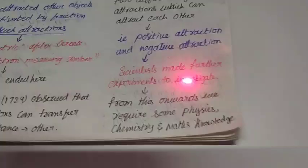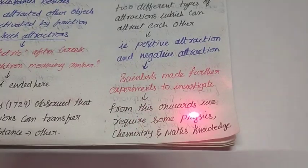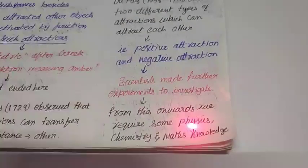Stephen Gray, 1729, observed that some attractions can transfer from one substance to another. Such substances which can transfer attractions are called conductors. Those which do not have such attraction transfer are called insulators. Afterwards, Charles Francis DuFay, 1698 to 1739, discovered two different types of attractions which can attract each other, so he named such attractions as positive and negative attractions.